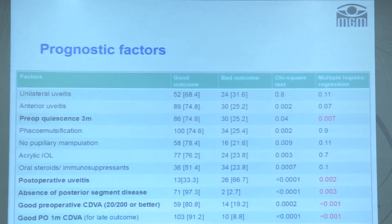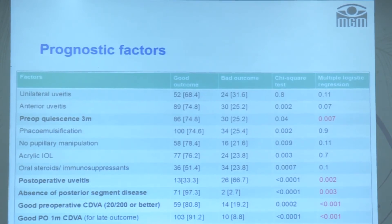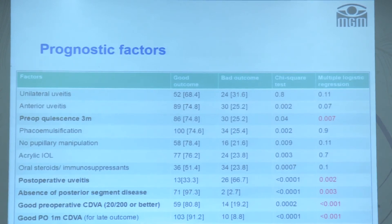Regarding prognostic factors, a preoperative quiet eye of three months' duration, absence of posterior segment disease (pre-existing or postoperative), and good preoperative or one-month postoperative visual acuity were significant factors for a good outcome. Postoperative uveitis was a significant prognostic factor for a poorer outcome.